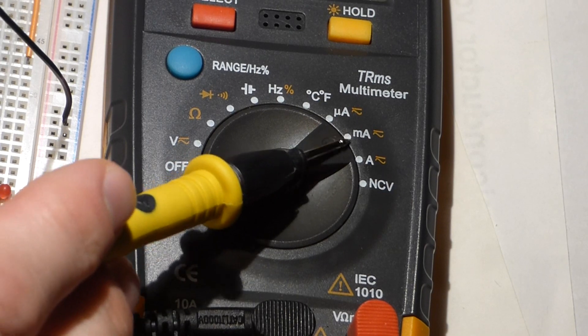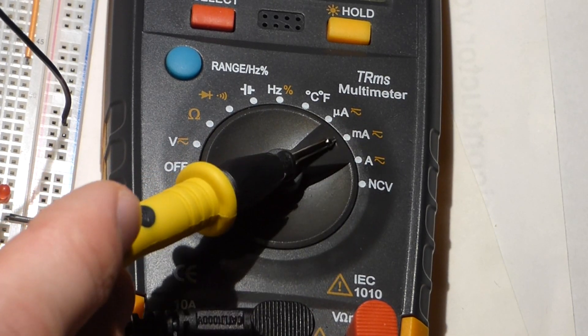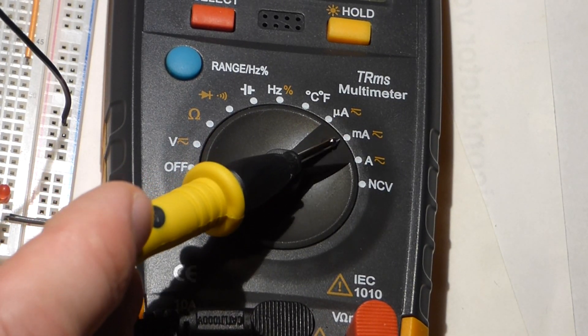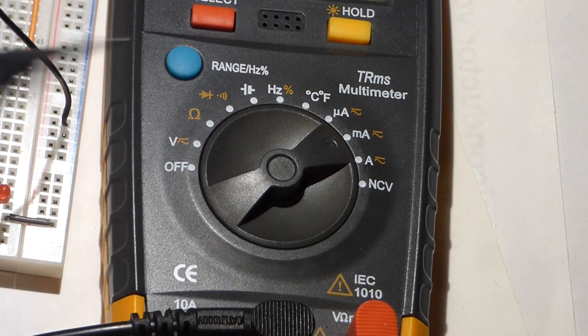So now I have turned the dial to milliamps, because since we're measuring a circuit with an LED, we know that it will be in the milliamp range.